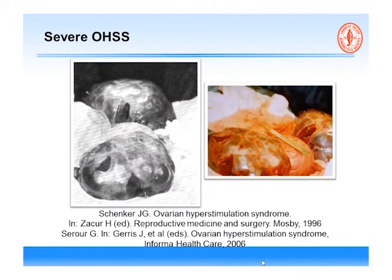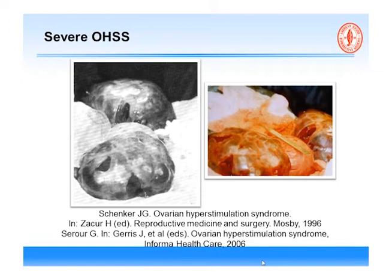If I want to leave you with one picture from this entire lecture, this is it — this is what you want to avoid. If you reach this point, you have failed. This picture is from Jerusalem — Joseph Schenker was head of Hadassah Hospital — and this picture is from Cairo, Egypt, and we put it on the cover of one of our articles. Normally ovaries are 3–4 centimeters; here the ovary is 40 by 30 by 30 centimeters.